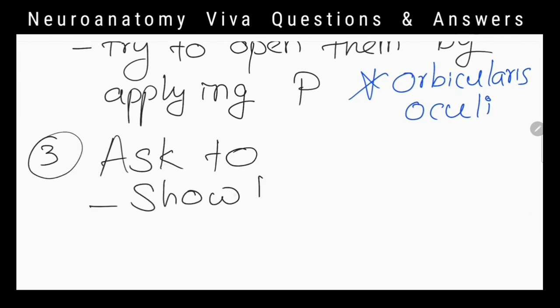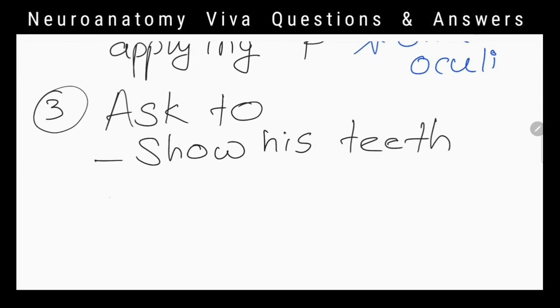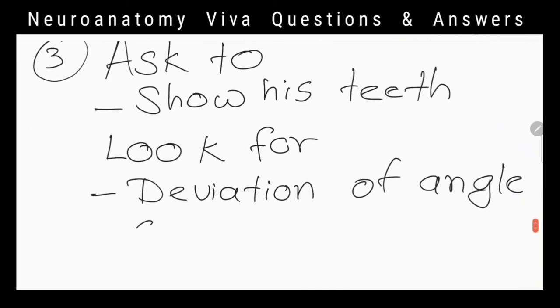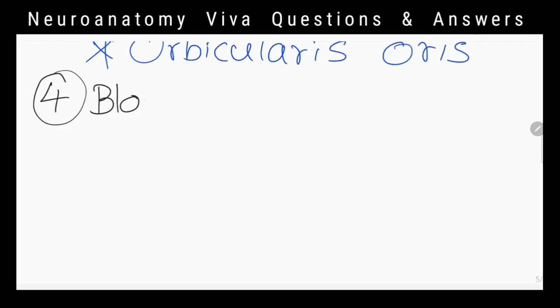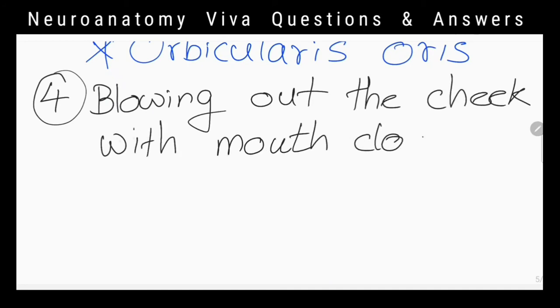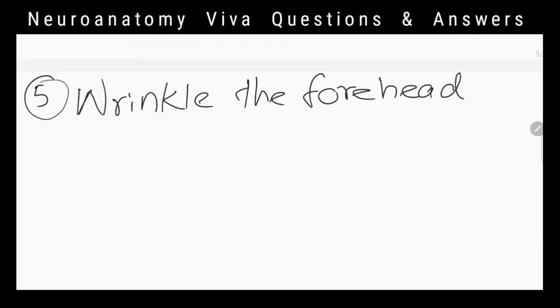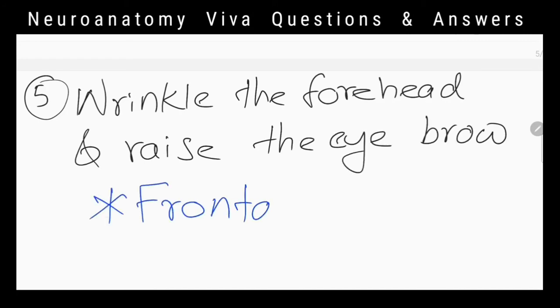Orbicularis oris can be checked by asking him to show his teeth and looking for any deviation of angles of mouth. Buccinator is checked by asking to blow out the cheek with mouth closed. Frontalis muscle can be checked by asking him to wrinkle his forehead and raise the eyebrow.